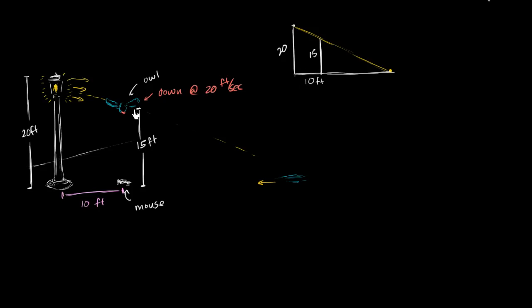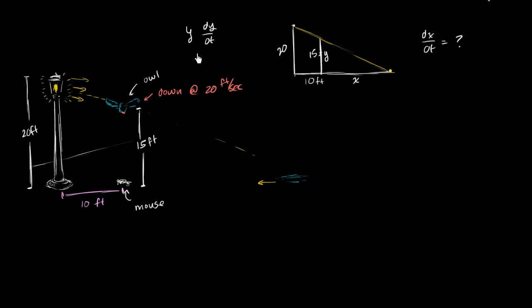Let's set up some variables. The height of the owl is changing, so let's call that y. Right at this moment y equals 15, but it is changing. Let's call the distance between the shadow and the mouse x. Given this setup, we want a relationship between x and y, and then find dx/dt — the rate at which x is changing with respect to time — using our known values of y and dy/dt.